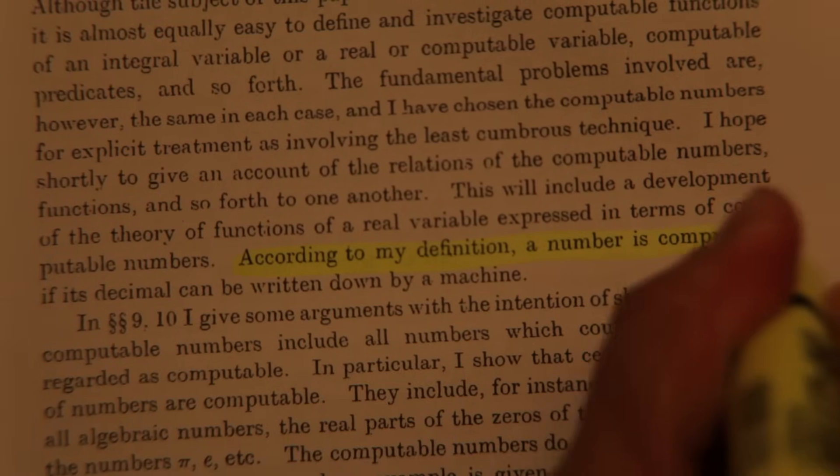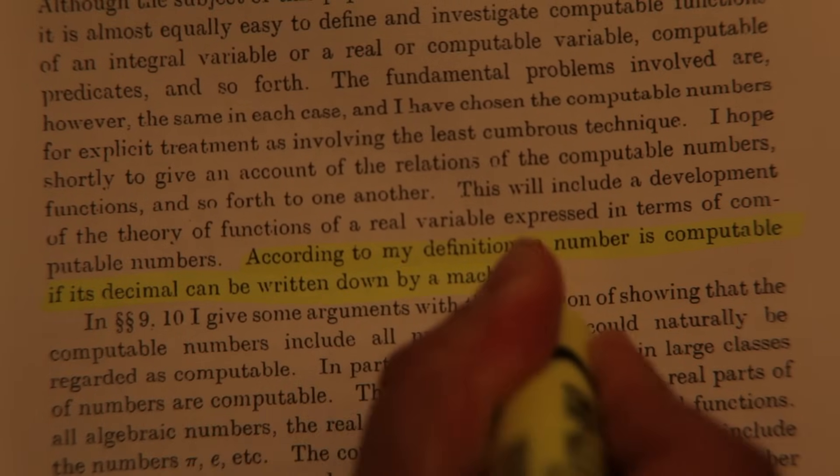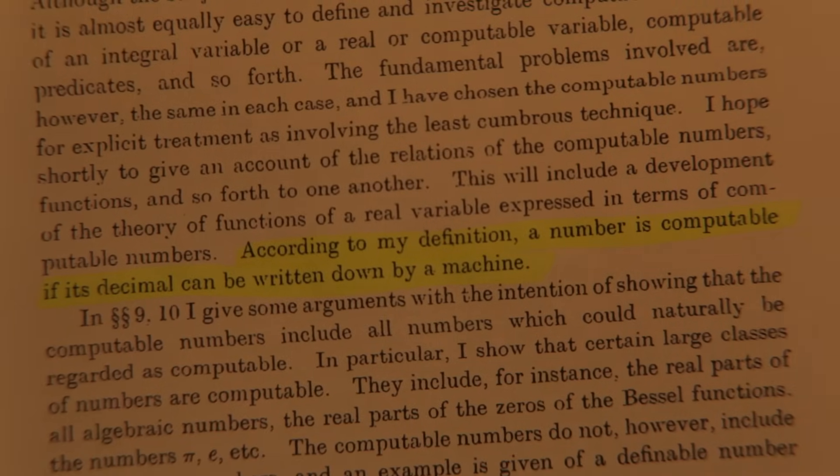Turing states that anything his universal machine can write down is what we call computable. So a computable problem is a problem that a Turing machine could be programmed to solve, given enough time and space to do it.